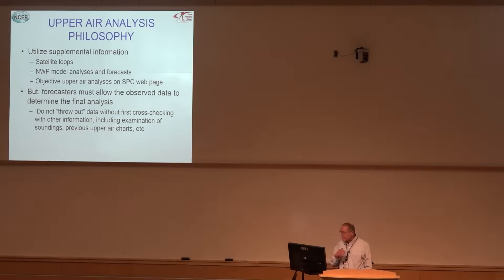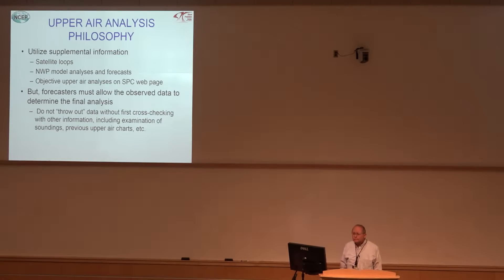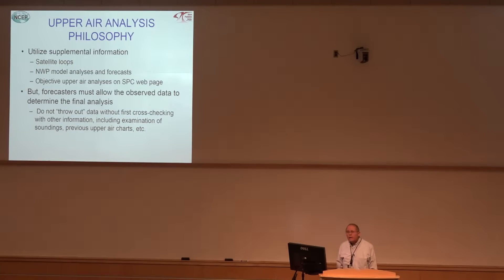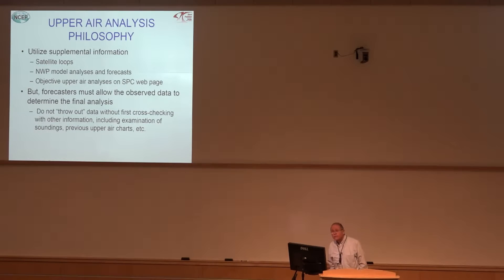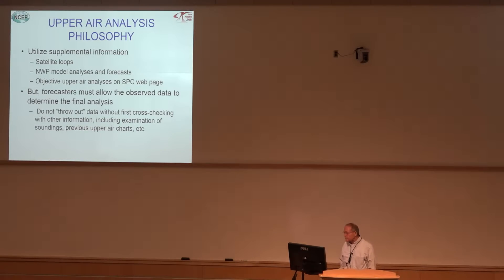We have to pay great attention to observed data and make sure we are not ignoring any details. Sometimes you will see, especially in the RAOBs — because they're relatively far apart — some data that may look a bit unusual initially. You might say it's not fitting your analysis, but maybe something special is going on in that area and it's just being sampled. Look at the sounding, compare it to the previous upper air chart, and make sure the data are actually wrong before you toss them out, because they could indicate something important.